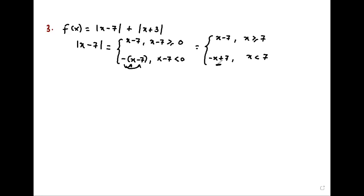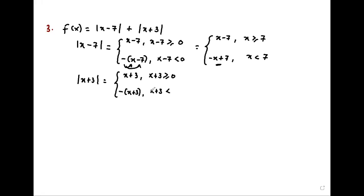We also go to x plus three as a piece and say this is x plus three if x plus three is greater or equal to zero. It is negative x plus three if x plus three is less than zero, giving us x plus three if x is greater or equal to negative three, and negative x minus three if x is less than negative three.